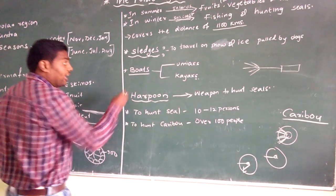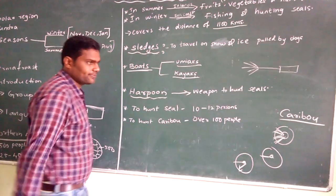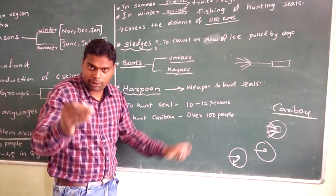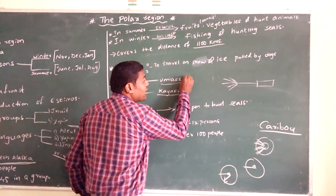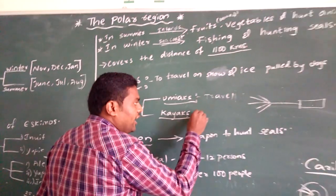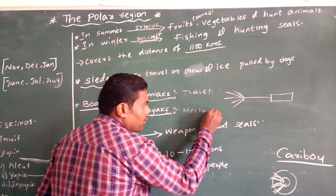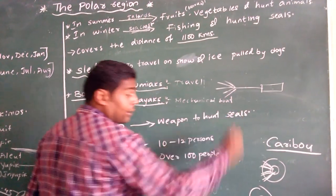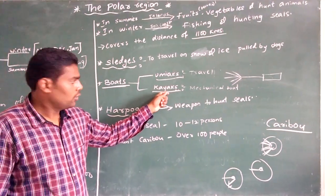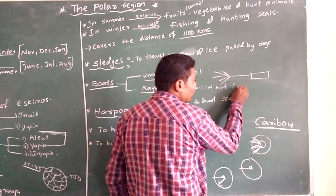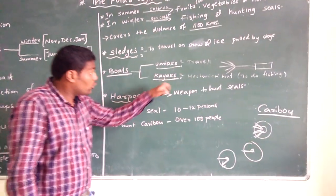Here the boats serve in two types. First one is Umayak and the second one is Kayak. Umayak is a boat which they use to travel from one place to another place on water. Kayak is a boat which they use to do fishing.